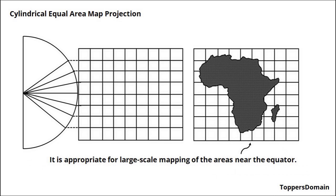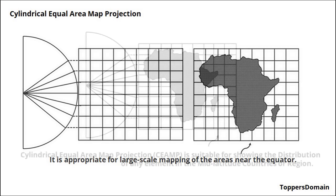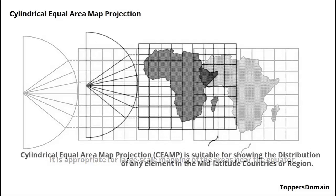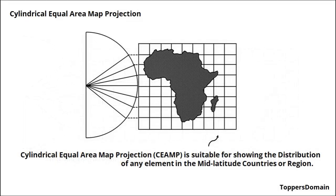Now, let's explore the practical applications of the Cylindrical Equal Area Map Projection. This projection is most suitable for large-scale mapping of areas near the equator. It's particularly effective for displaying the distribution of elements in mid-latitude countries or regions.